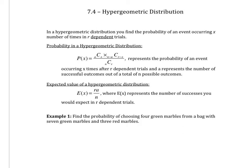The probability in a hypergeometric distribution is found by this equation right here. And all that represents is the event occurring X times after R-dependent trials. So R is going to be the number of dependent trials that you have.